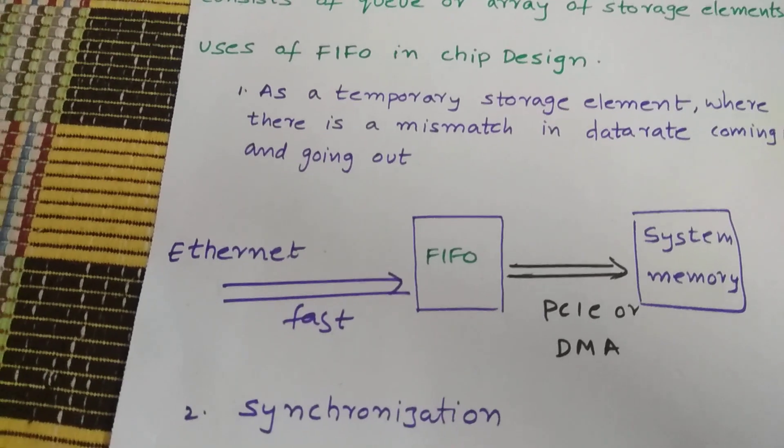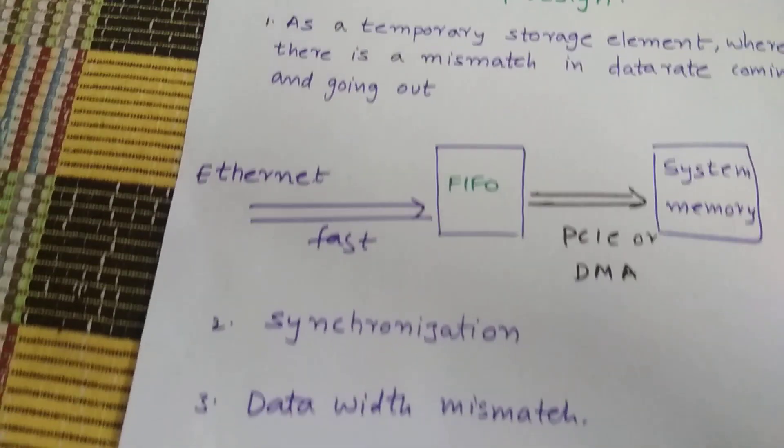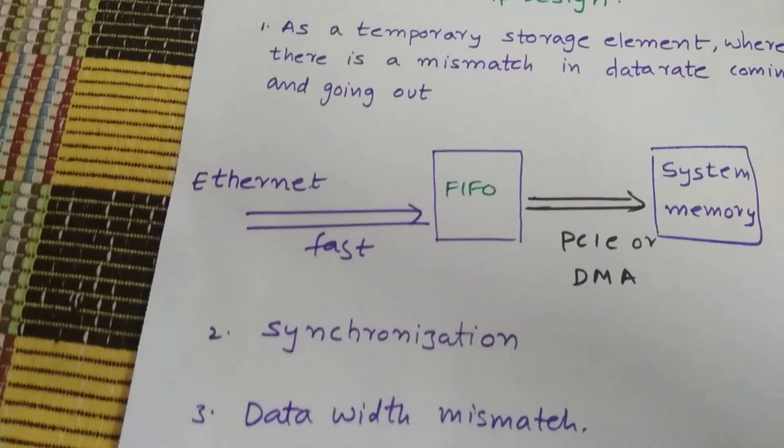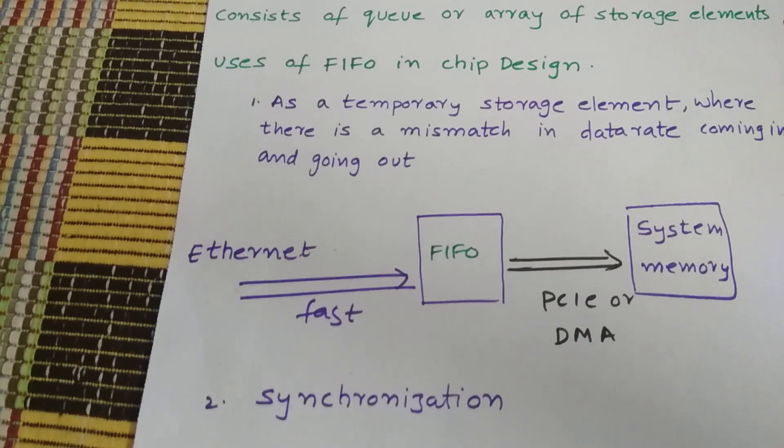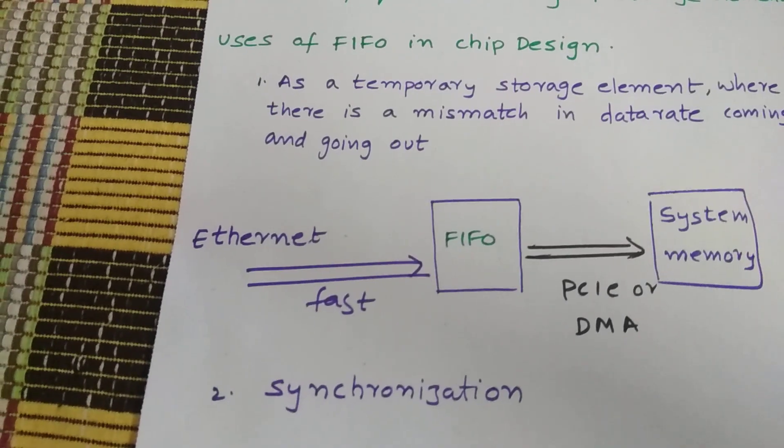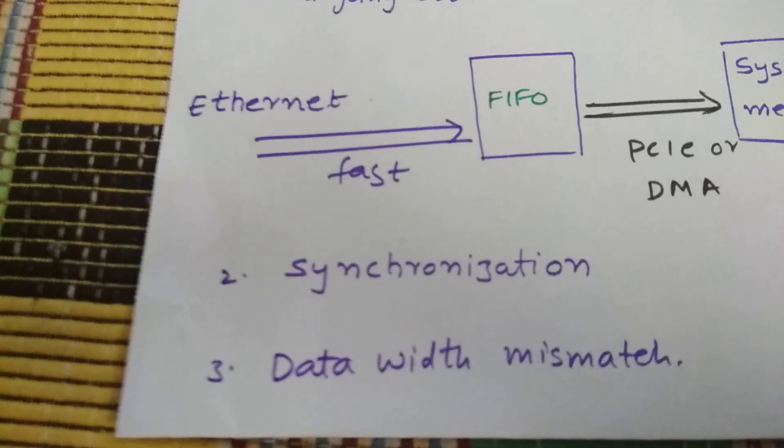So apart from synchronization and mismatch in data rate coverage, FIFO can also be used for data width mismatch between the incoming paths and outgoing data paths. So what happens if device A which has an output of 32 bit width